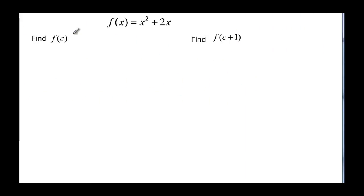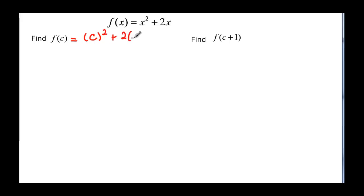Now let's keep going, but we're not using numbers this time — but we don't do anything different. Whatever's inside the parenthesis goes in for the x's. We've got c, and we've got to square that plus two times c, and that's really all you can do: c squared plus two c.